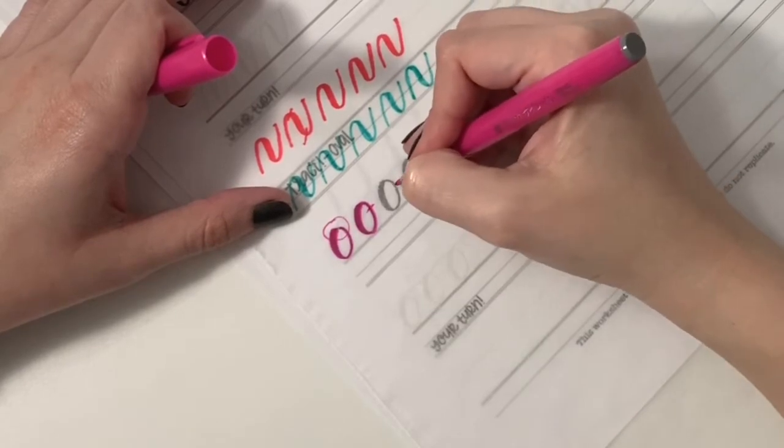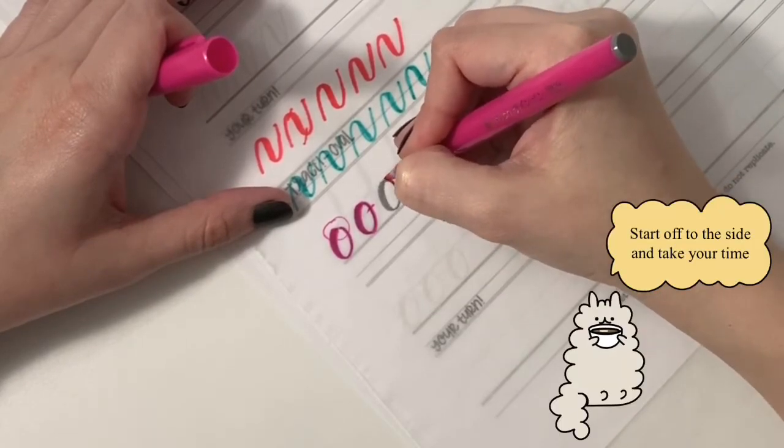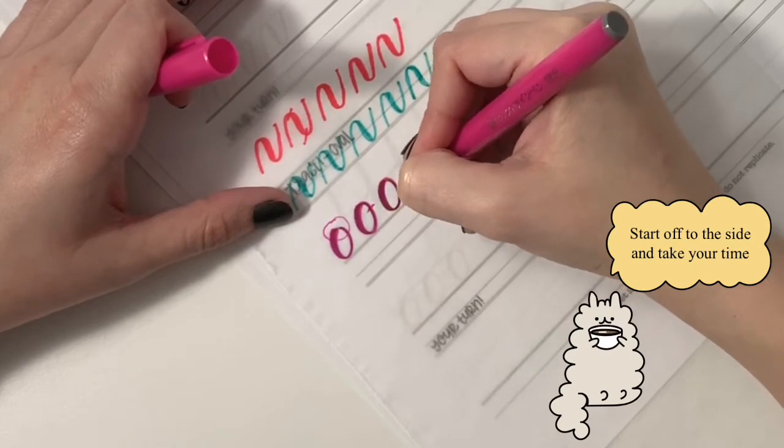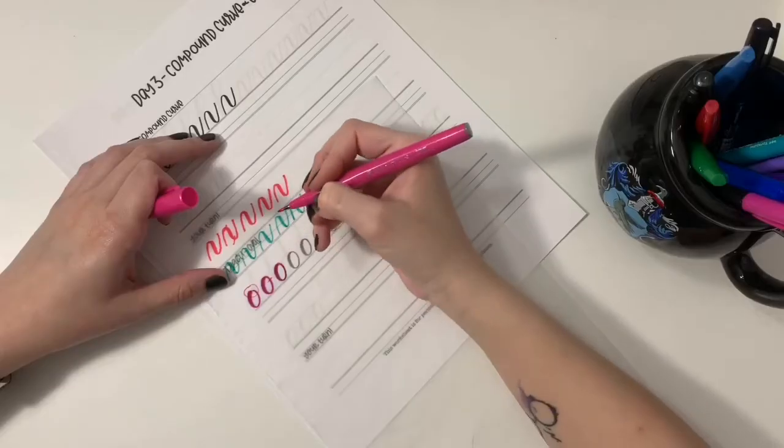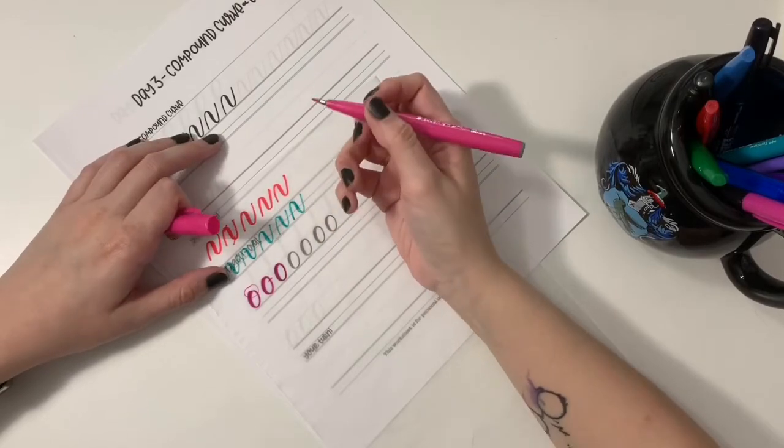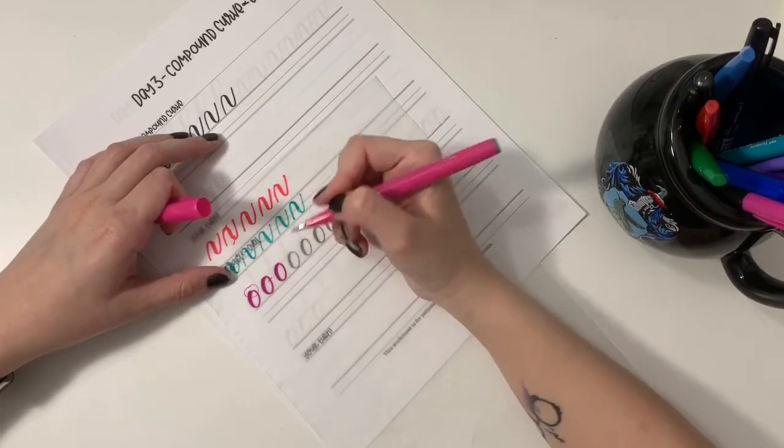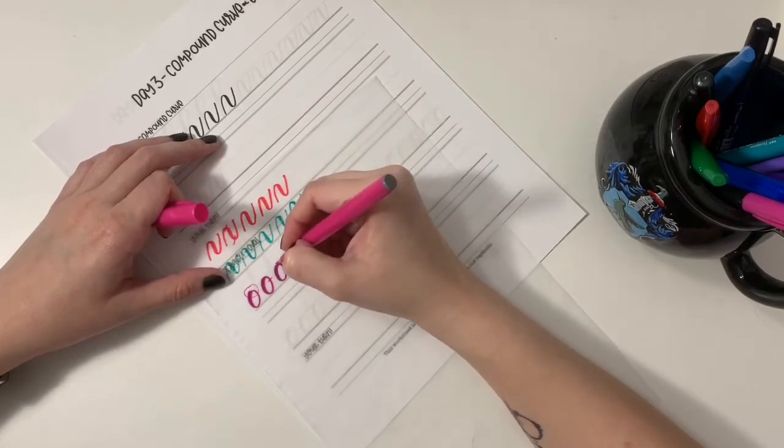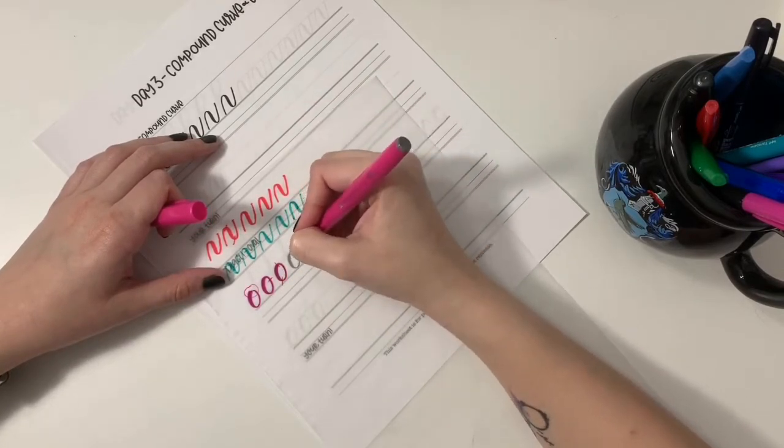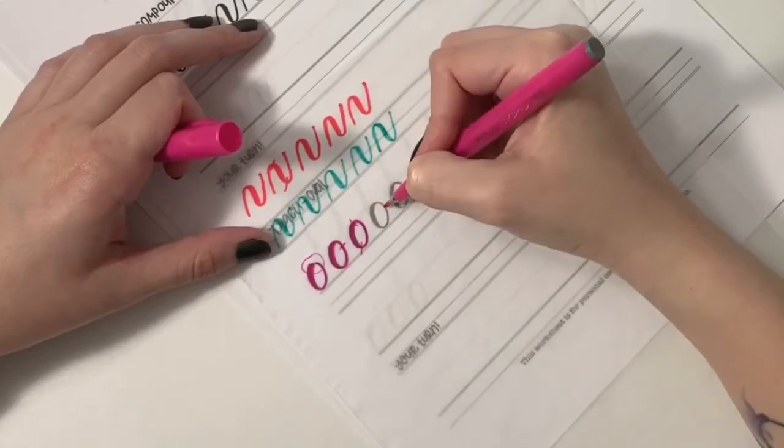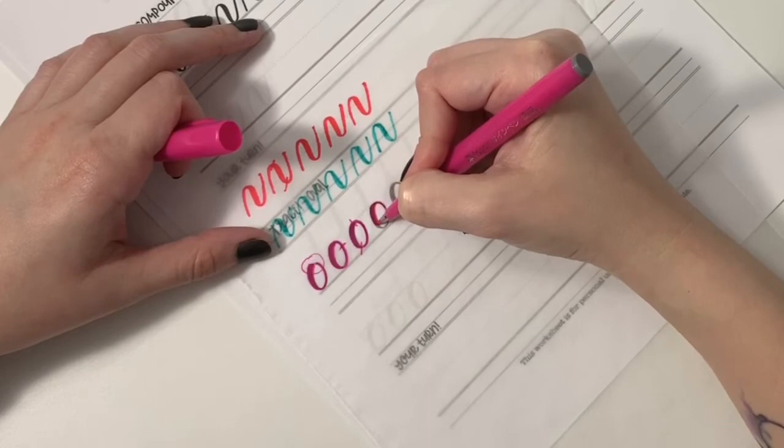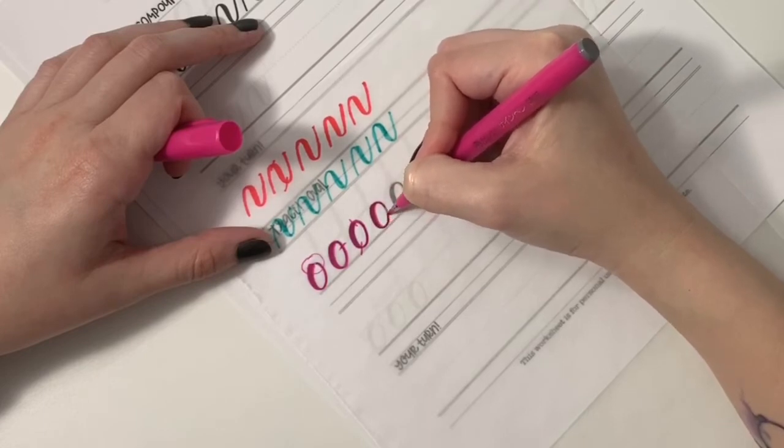So let's do that again. Thin up, thick down, thin up. It takes some practice to make sure that those lines match. So just keep at it, making sure you're going very slow, especially during those transitions right here and here. So thin up, start applying pressure, start letting off pressure, thin up.